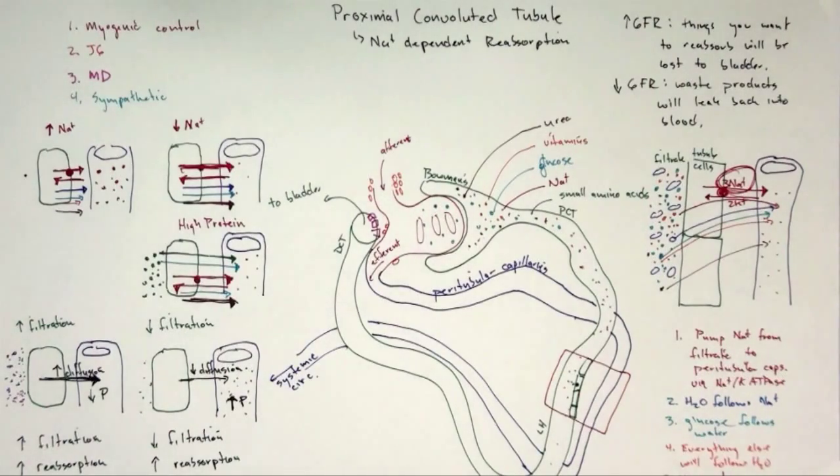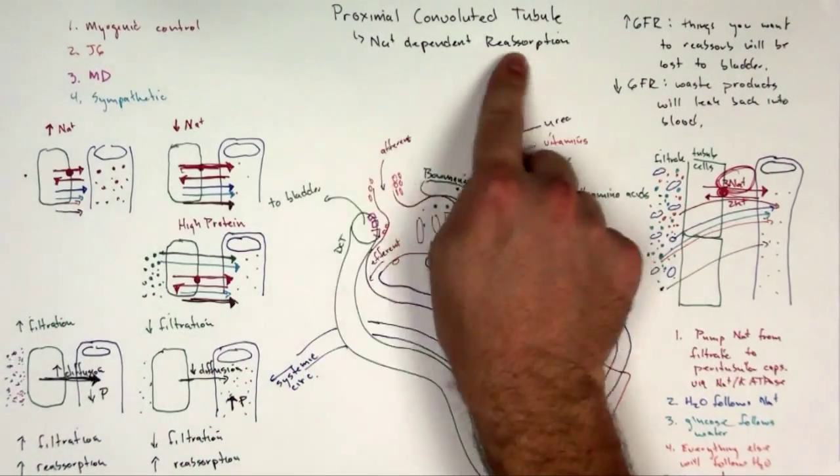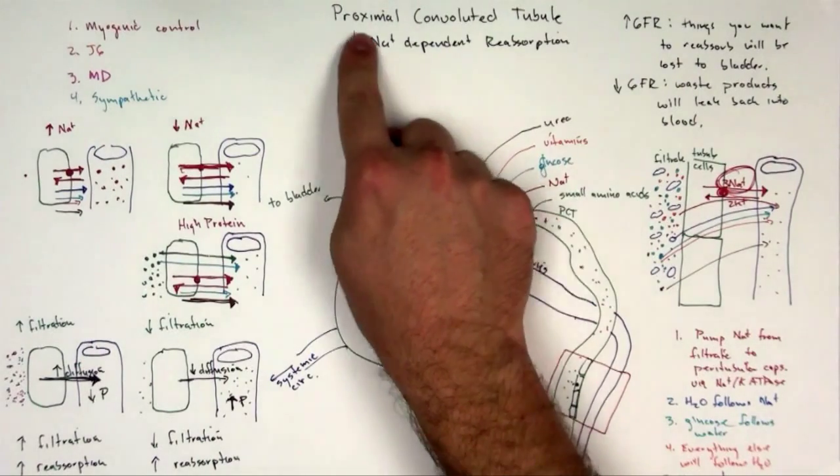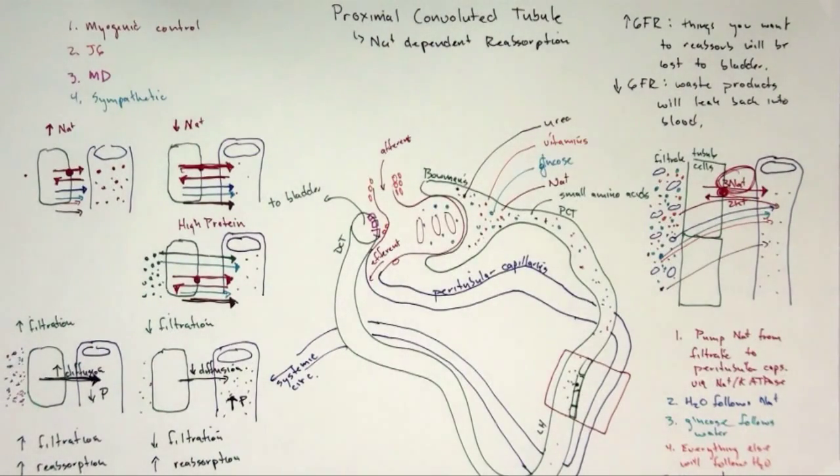So what I'm trying to say is an imbalance of sodium is going to quickly become an imbalance of many other ions—calcium, potassium, chloride—could be the amount of protein and vitamins and glucose as well. So this is one of the reasons sodium has to be so regulated in the body: it has this huge effect on proximal convoluted tubule reabsorption.